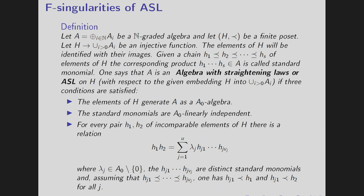And one say that A is algebras with straightening laws or ASL with respect to H if three conditions satisfy. The first condition is the element of H generate A as an A0 algebra. Second one is the standard monomials are A0 linearly independent. And then the third one is the straightening law relation that even H1 and H2 which are not comparable, then there exists a relation which says that H1 dot H2 is equal to the summation of standard monomials where we have this that Hj1 the first term is strictly less than H1 and it is also strictly less than H2.